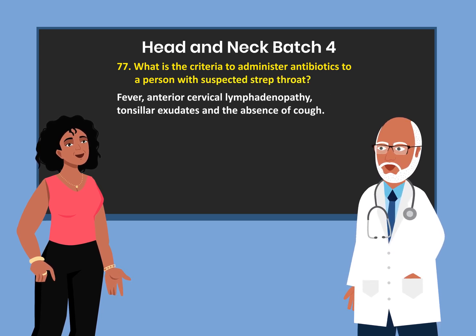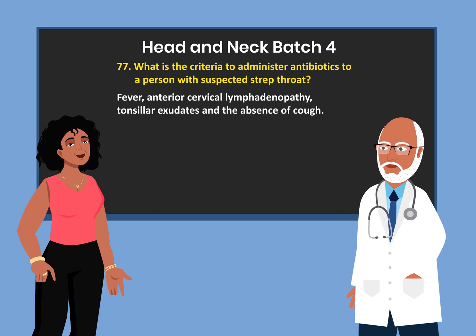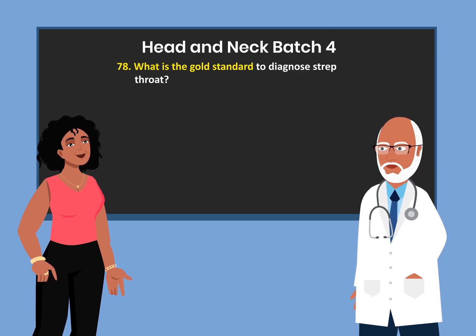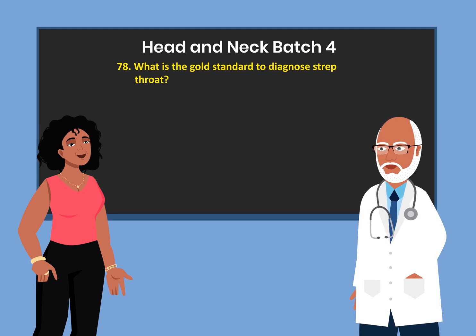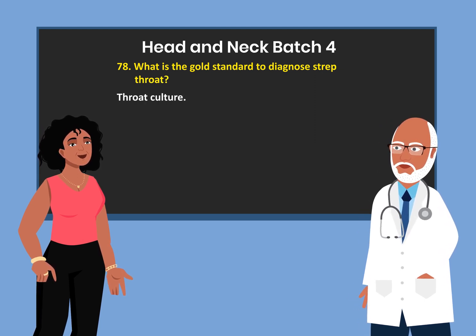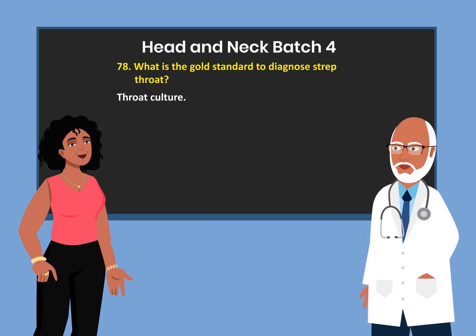What is the criteria to administer antibiotics to a person with suspected strep throat? Fever, anterior cervical lymphadenopathy, tonsillar exudates, and the absence of cough. What is the gold standard to diagnose strep throat? Culture of the throat, or throat culture.